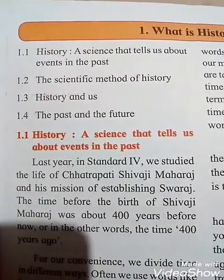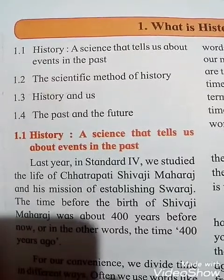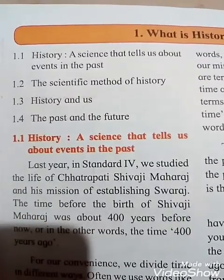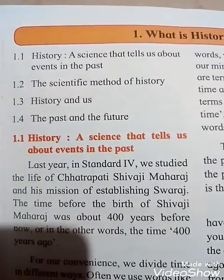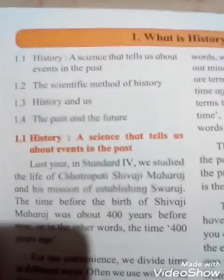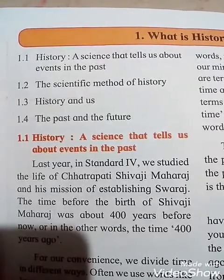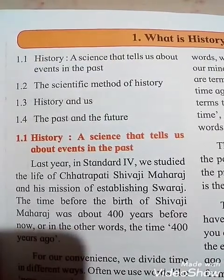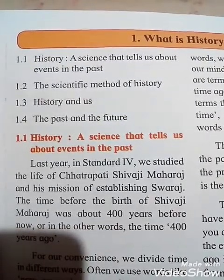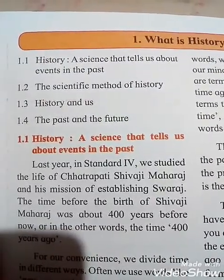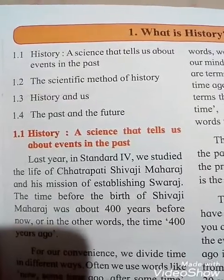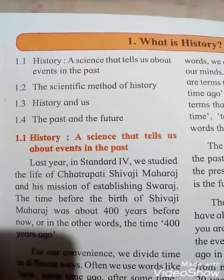The four main points we will discuss in this chapter are: 1.2 — the scientific methods of history; 1.3 — history and us; and 1.4 — the past and the future.